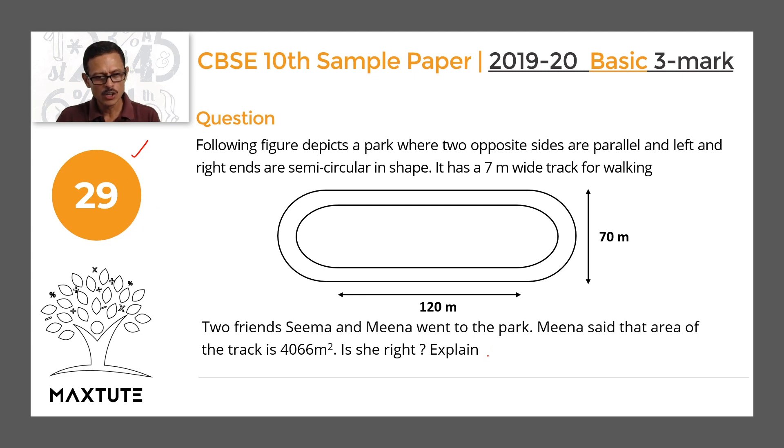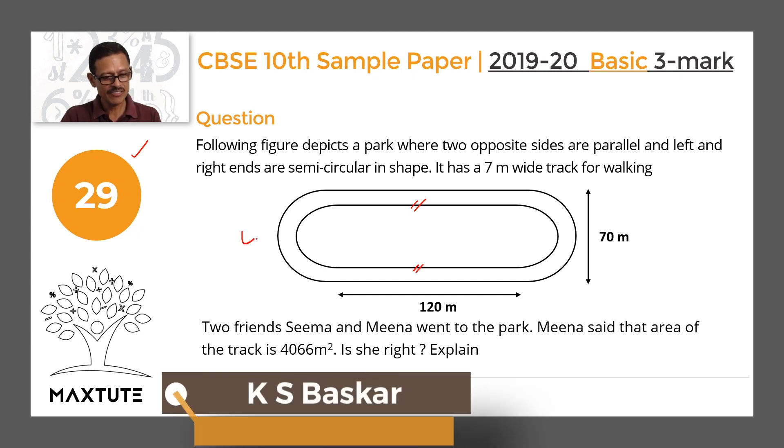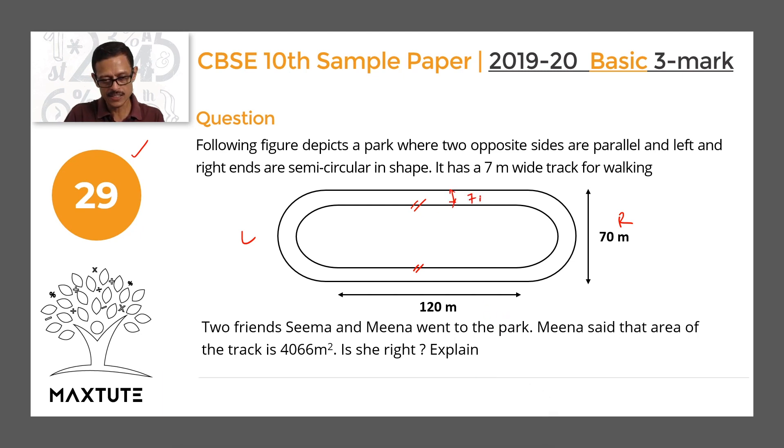The following figure depicts a park where two opposite sides are parallel. These two sides are parallel and the left and right ends are semi-circular in shape. It has a 7m wide track for walking, so the width of this walking track is equal to 7m.